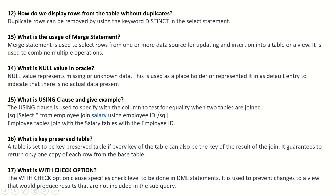What is a key-preserved table? A table is set to key-preserved if every key of the table can also be the key of the result of the join. It guarantees to return only one copy of each row from the base table. What is WITH CHECK OPTION? The WITH CHECK OPTION clause specifies the check level to be done in DML statements. It is used to prevent changes to a view that would produce results not included in the subquery.